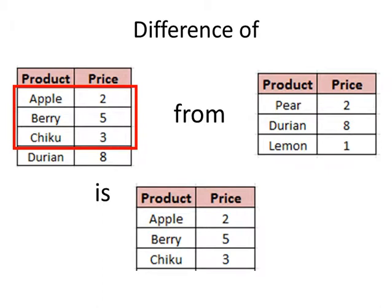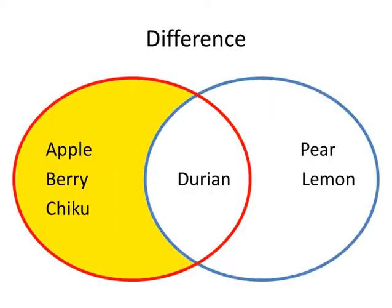...but are not in the second table. This is the result of the difference operator. In the Venn diagram format, we can see this clearly. The difference operation is represented by the yellow shaded portion of the Venn diagram.